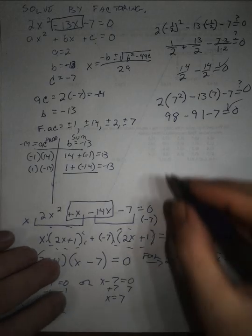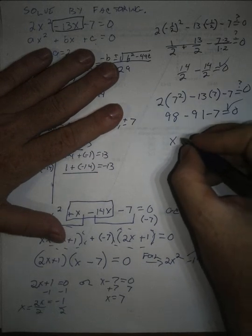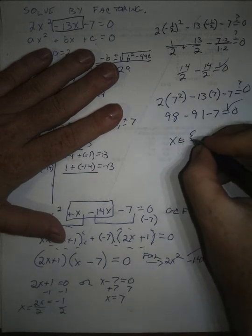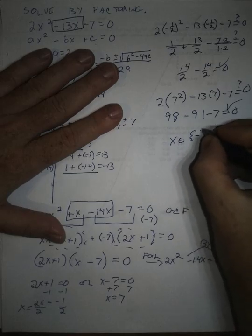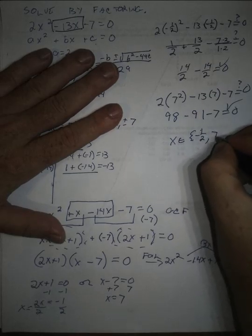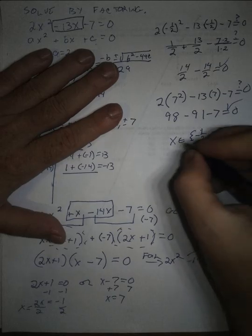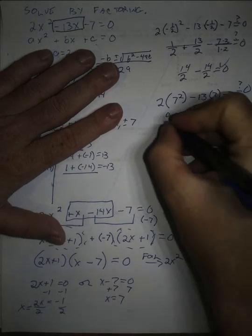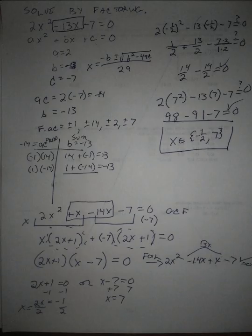So the correct answer, if you want to write it as a set, is x, an element of this set, negative 1 half and 7. This is the solution set to the original equation.